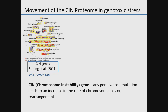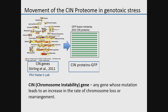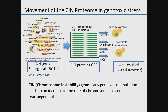At the end of my postdoc, we took the CIN gene list we had made and extracted from the yeast GFP collection all GFP fusions to these CIN genes. We had a CIN proteome array that we subsequently screened for relocalization using broad genotoxic stresses — UV irradiation, MMS (the DNA alkylating agent), and hydrogen peroxide as an oxidative stress. We then imaged these GFPs at 100X oil immersion using low-throughput methods.